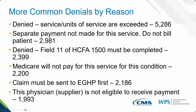'Claim must be sent to the EGHP first' — EGHP means employer group health plan — indicates a Medicare secondary payer situation. We have great videos on our YouTube channel explaining Medicare secondary payer situations. 'Physician or supplier not eligible to receive payment' — almost 2,000 denials — means you should check the provider enrollment files to confirm the provider was eligible to receive payment on that date of service, and verify the provider number was entered correctly on the claim.